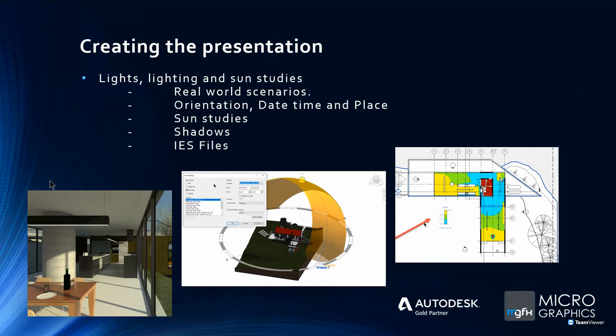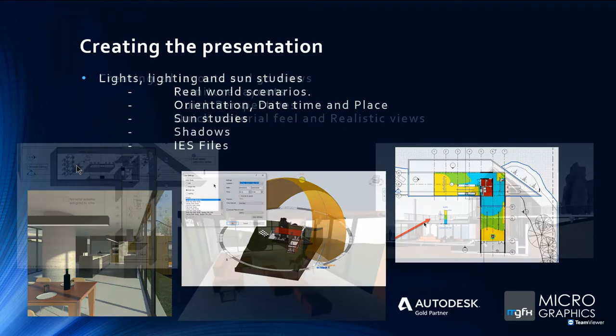Revit caters for all lighting eventualities — you can add different color shading. If a light fitting has a slightly red, green, or blue shade, you can just add that into your light fitting and it's catered for.